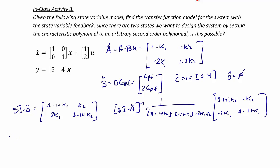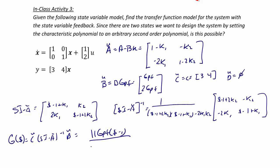Finally, the transfer function, which is C-tilde times (sI minus A-tilde) inverse times B-tilde, equals 11·GPF times (s minus 1) over (s minus 1 plus K1 plus 2K2) after simplification.